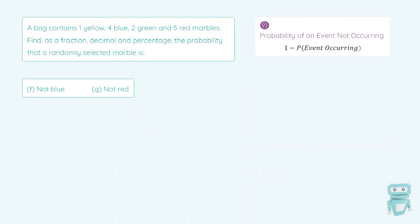Last up, let's talk about the probability of something not happening. Now, here I'm asked to find the probability that a randomly selected marble is not blue. So it can be any of the other colours except for blue. So how am I going to do that? Well, I'm going to give you a wee shortcut. The probability of an event not occurring is 1 minus the probability of the event occurring.